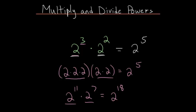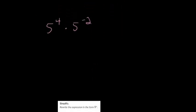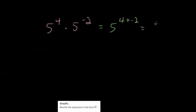Let's try some different examples. Here we have 5 to the 4th times 5 to the negative 2 power. The pattern still works here even though we have a negative exponent — it would just be 5 to the 4th plus negative 2, or 5 squared. But again, we don't want to just memorize that if they have the same base you add the exponents. You want to understand it.